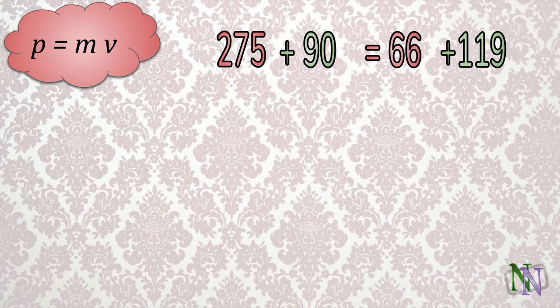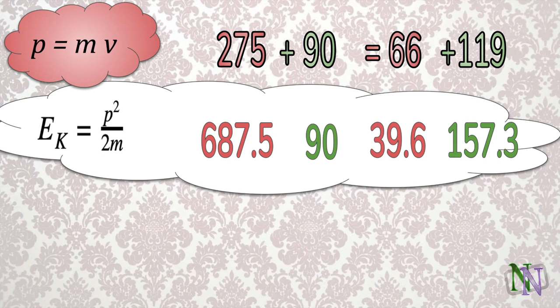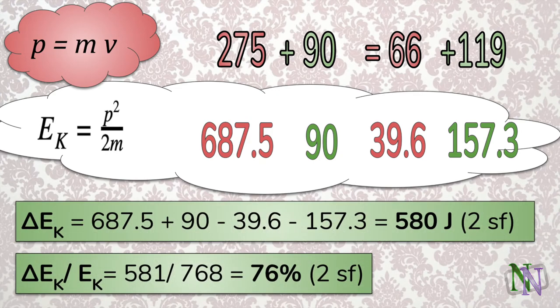Now we have enough information to use the momentum to look at the changes in kinetic energy which were caused by the way in which the bodies of the skaters reacted. Here we can see that momentum was conserved. And now we use the formula connecting momentum and kinetic energy to find the kinetic energies of each body, each before and after. This information can be combined to show how much kinetic energy was converted during the collision, and what proportion of the whole that represented. It seems like it might have been a painful collision.